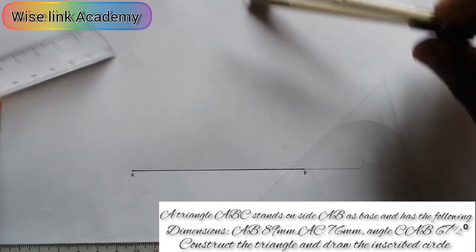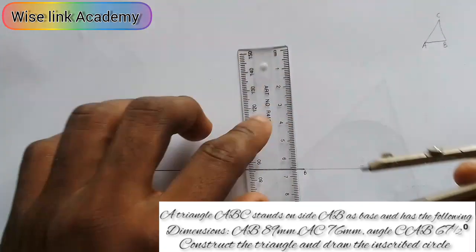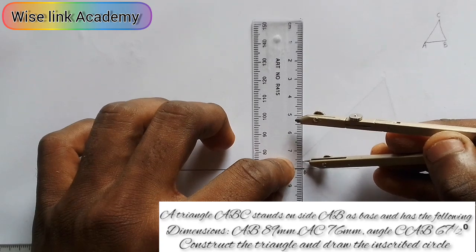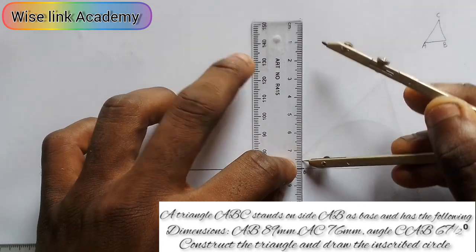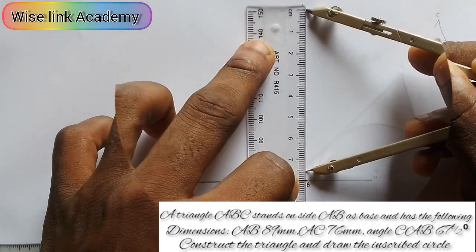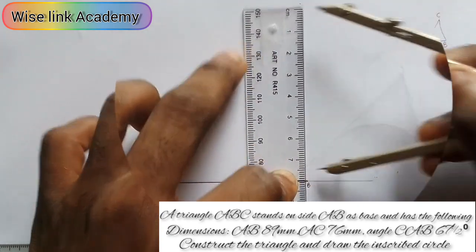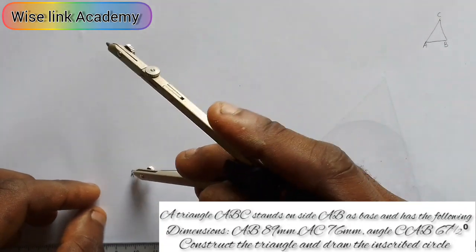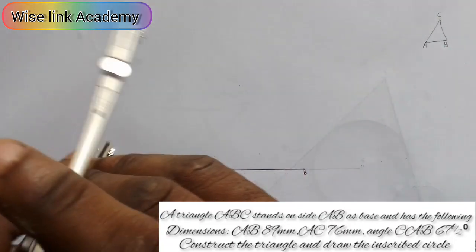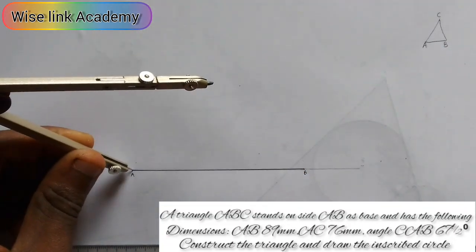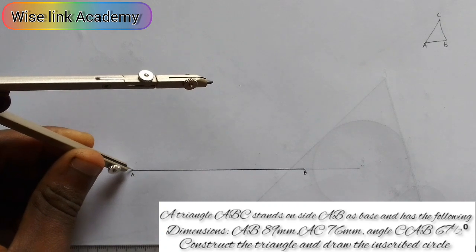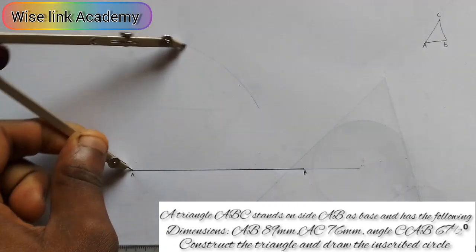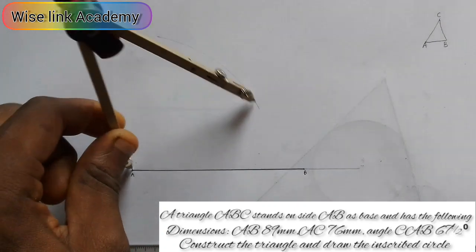I will take my compass on a ruler, measure 76mm — 76 falls here. I will put my compass at point A and strike an arc this way.